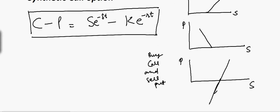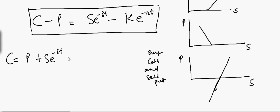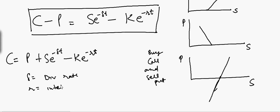Now suppose you want to create a synthetic call. All you have to do is rearrange this function: C is equal to P plus S times e raised to minus gamma T, where gamma is the dividend rate and r is the interest rate.